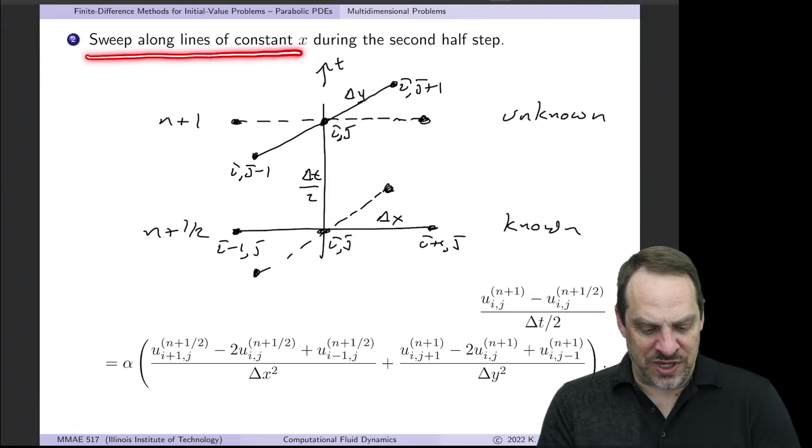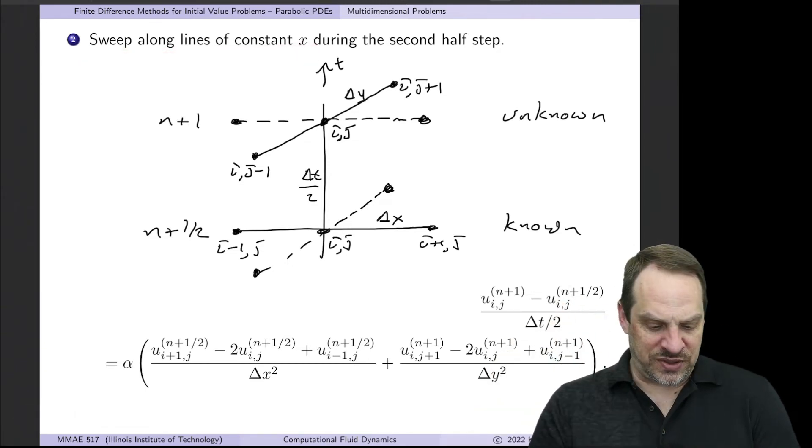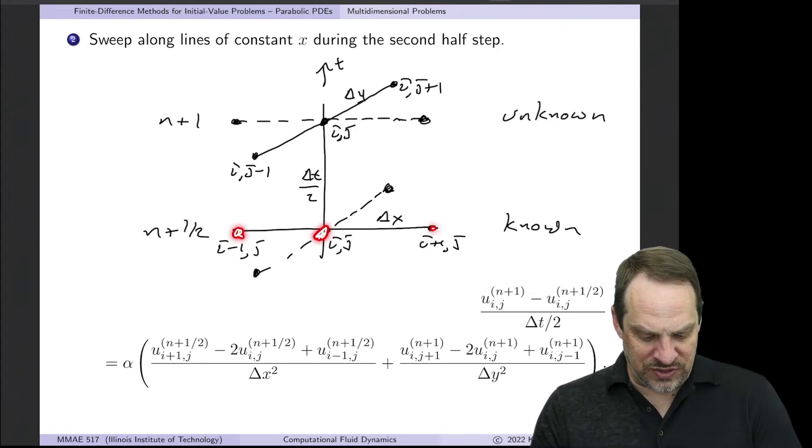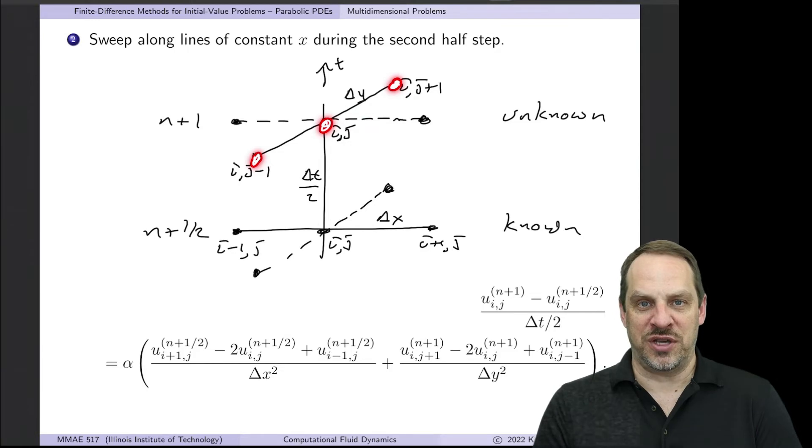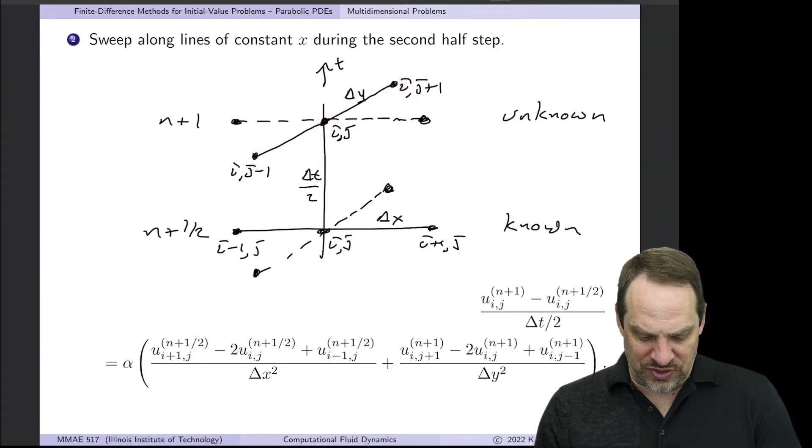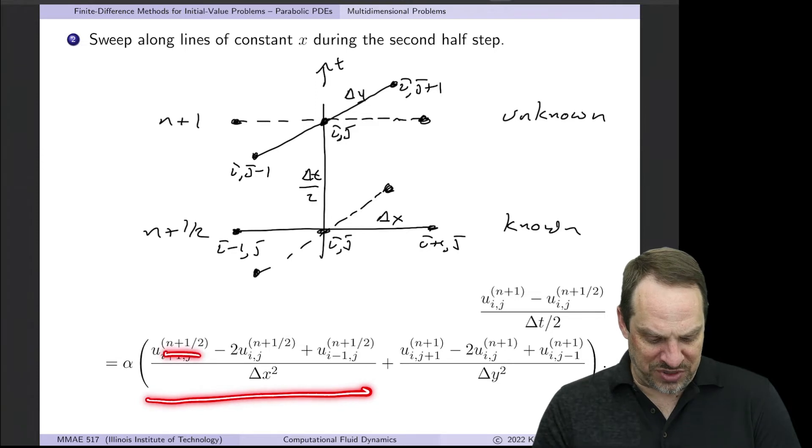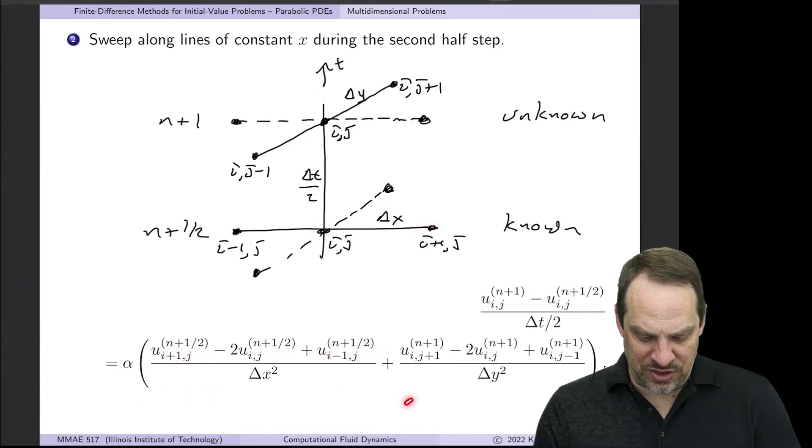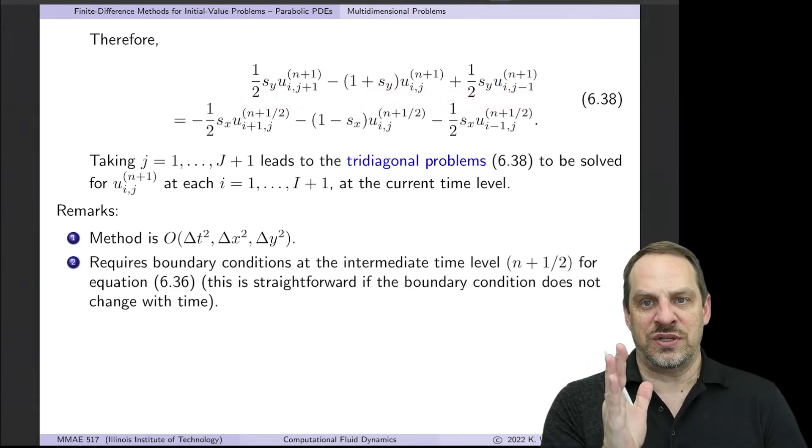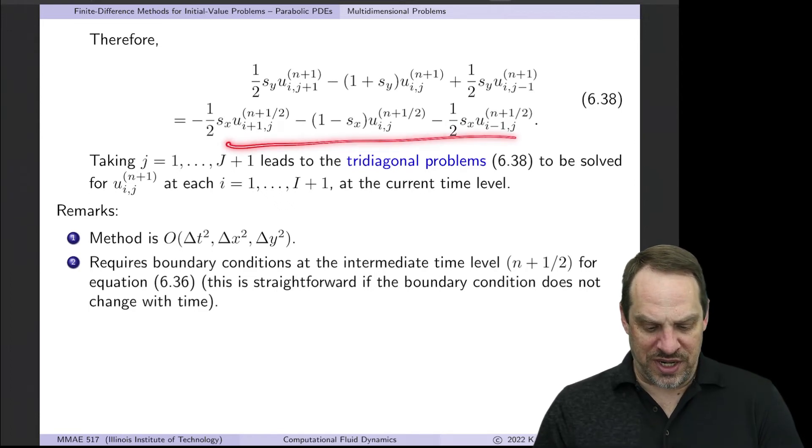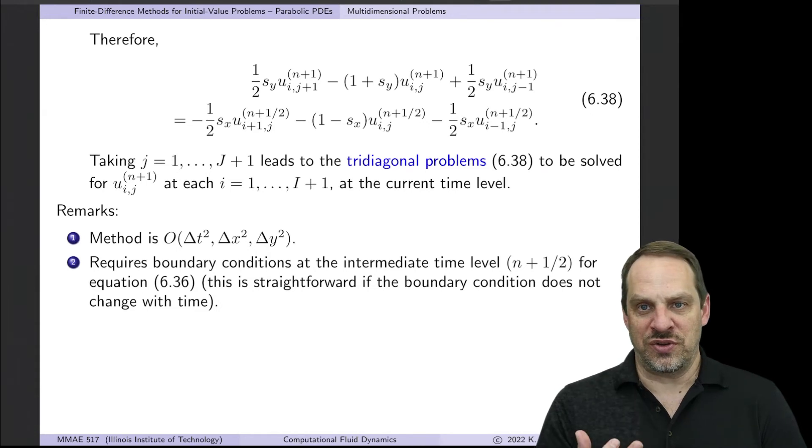Then for sweeping along lines of constant x, so it's like the alternating direction, now we're doing lines of constant x. Now the x derivative is taken at the n plus a half time level, the previous time level, and the y derivative is taken at the next time level, the n plus first time level. So again, second order accurate central difference in time between n plus a half and n plus 1. And then the x derivative is at the n plus a half time level, that's these three points. And then the partial squared u partial y squared term is at the n plus first time level. So that's these three points. Once again, unknowns on the left, we only have three, one, two, three. Those are lines of constant x, so vertical lines in the grid. And then everything else is on the right-hand side. Again, tridiagonal problem to solve, solve that using the Thomas algorithm.